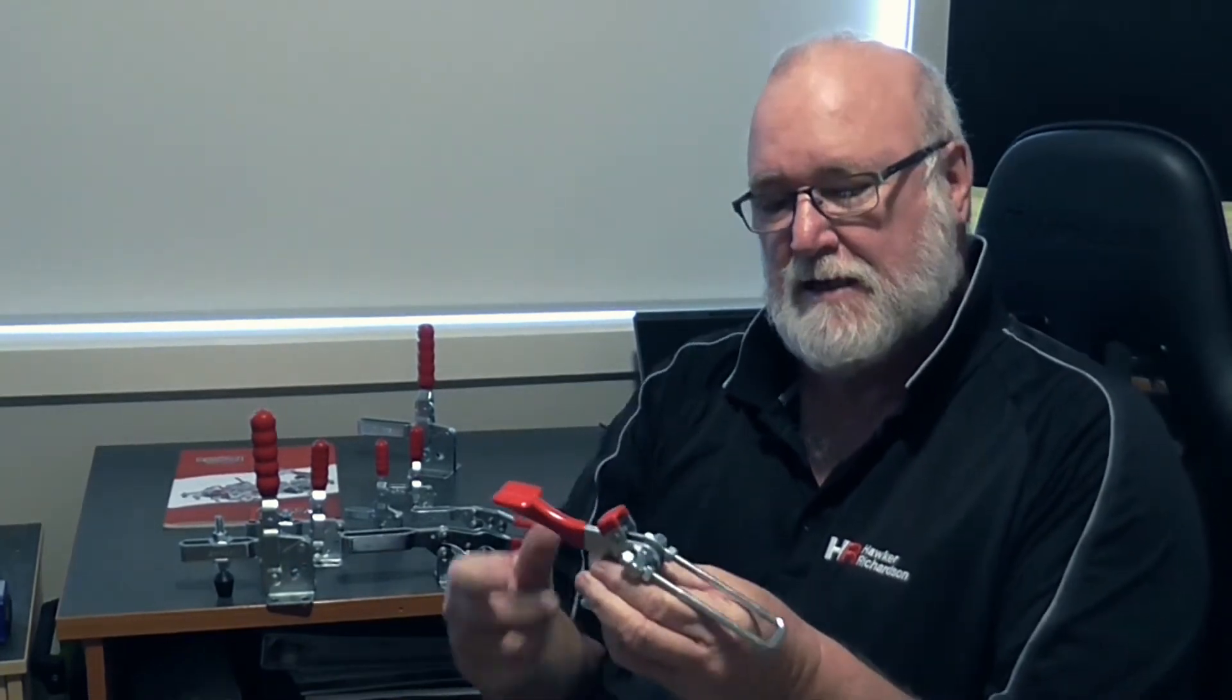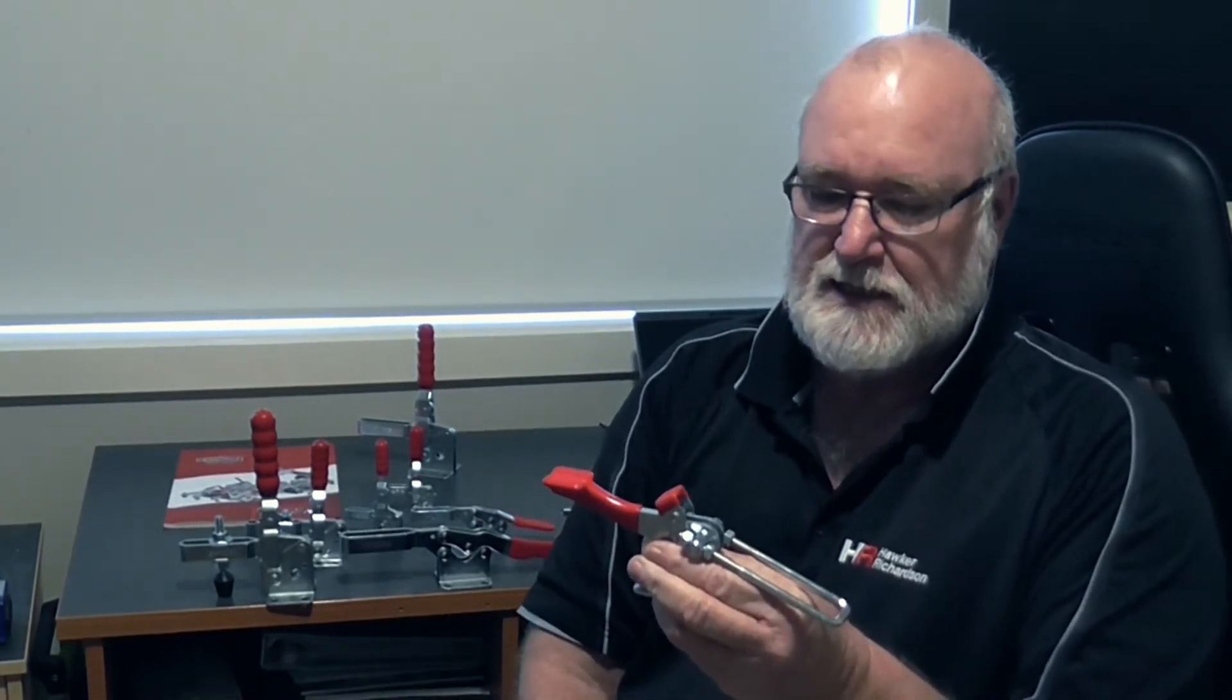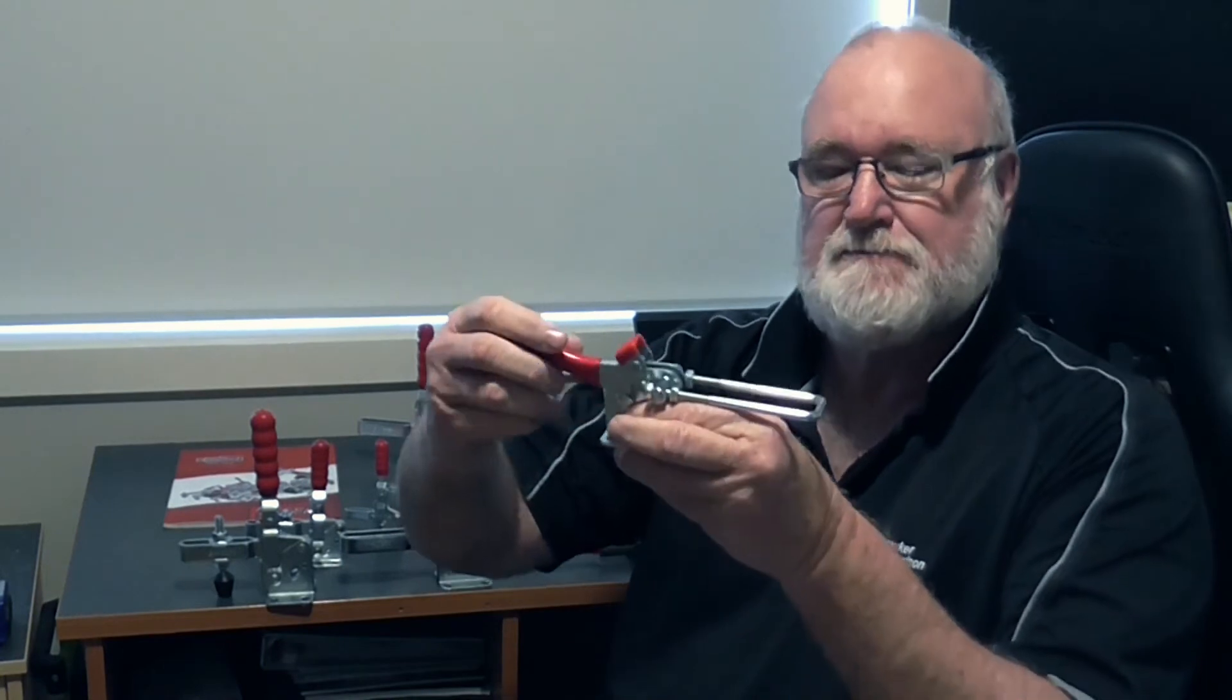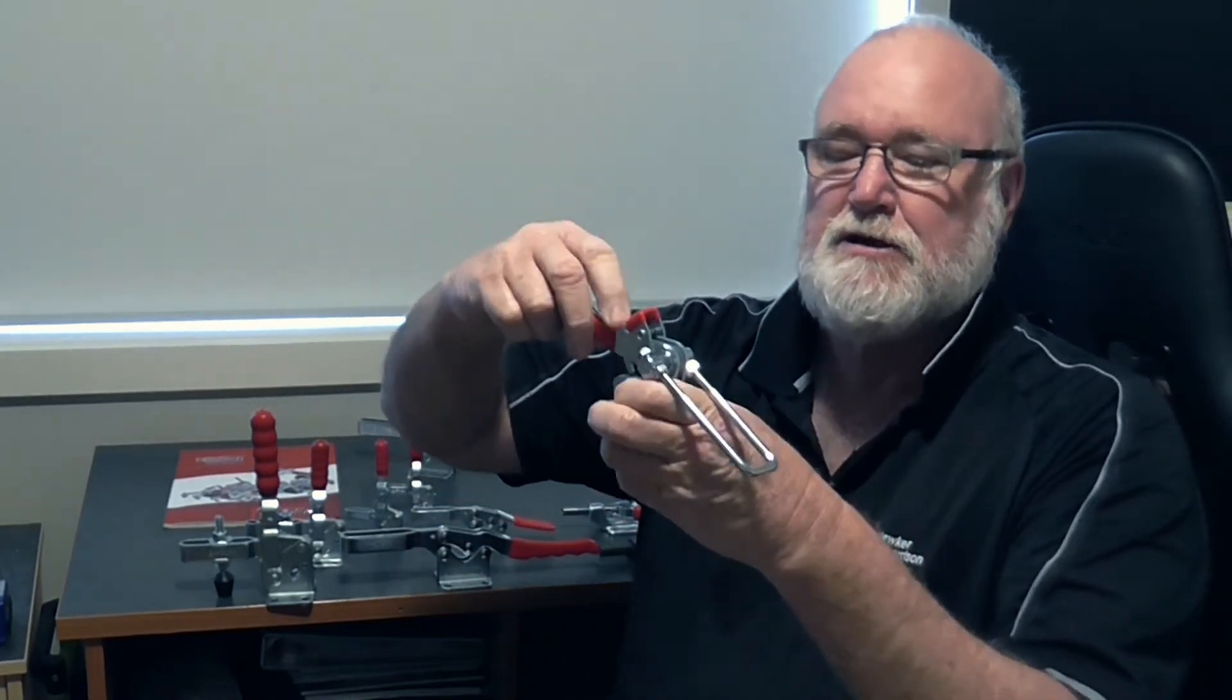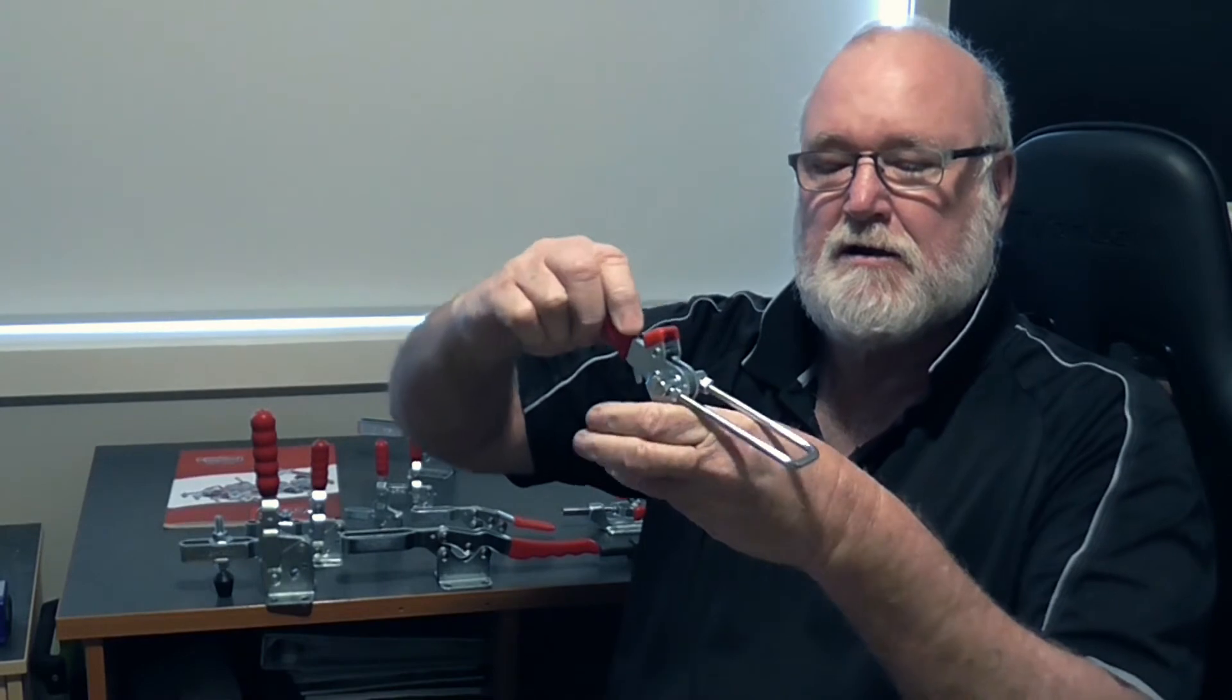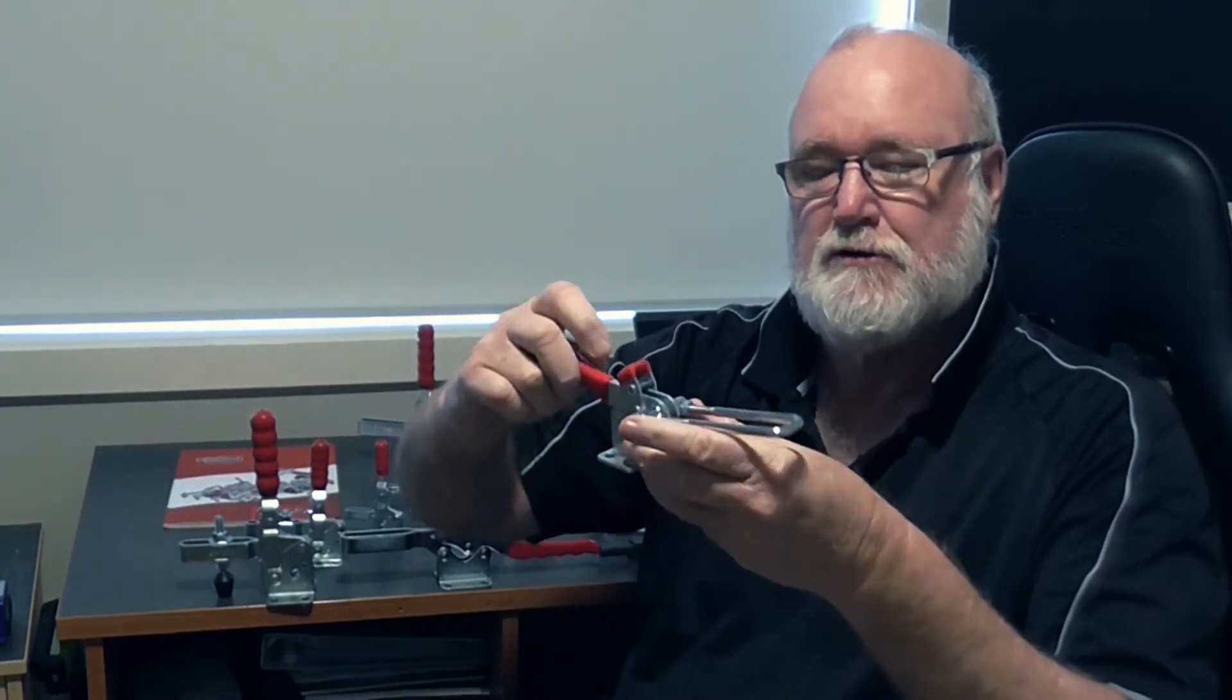All of these clamps are available in stainless steel as well. This one here is a latch clamp, generally used for closing a hatch or a lid of some sort.